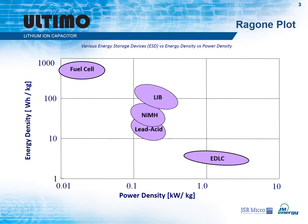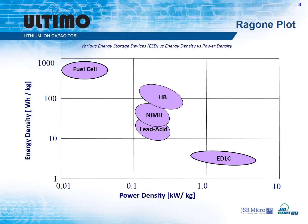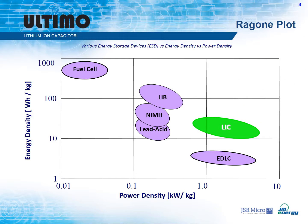Here we plot various familiar energy storage devices for energy density and power density. The LIC cell design results in an ultracapacitor with increased energy density, two to three times that of EDLCs, while still maintaining high power capabilities. We continue to improve energy and power density as shown in the direction of the arrow.